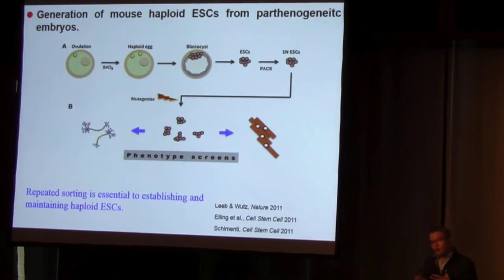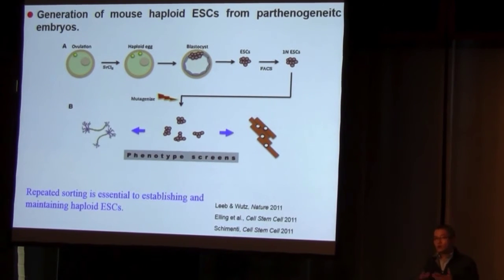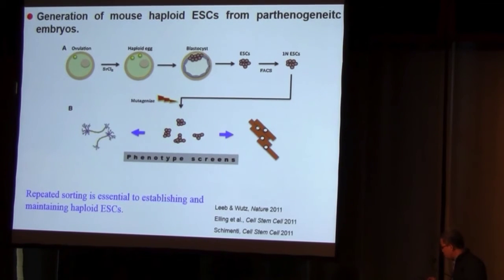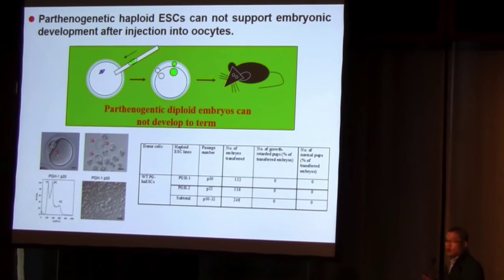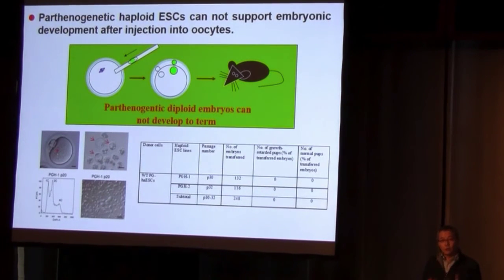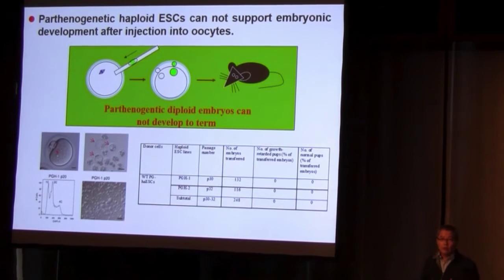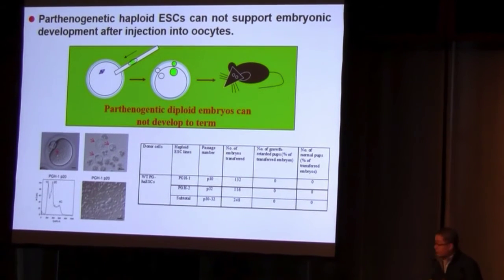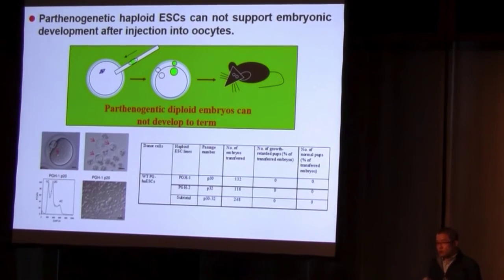However, these cells are from parthenogenetic embryos, which were derived from oocytes — meaning these cells maintain typical maternal epigenetic patterns. Therefore, if you inject these haploid cells into an oocyte to produce a diploid embryo, these diploid embryos are parthenogenetic and cannot develop to term in vivo. We tested this by generating two haploid cell lines from parthenogenetic embryos. By injection of these cells into oocytes, we found all injected oocytes could not develop to term.